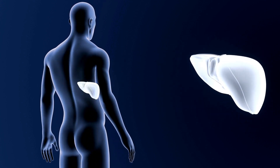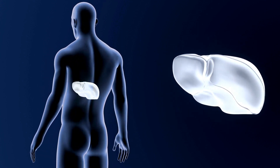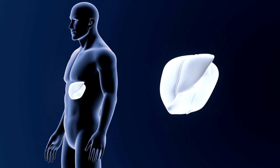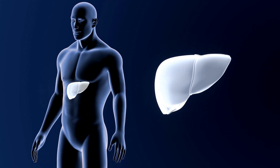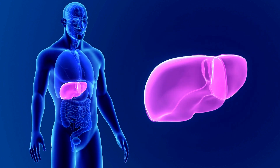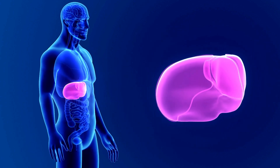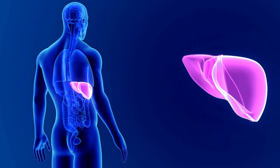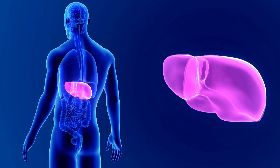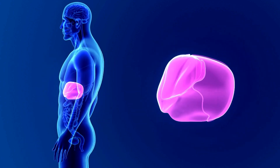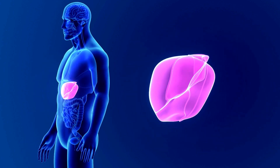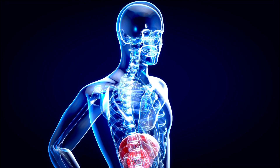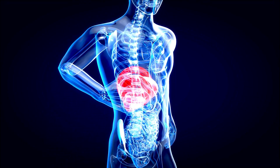Cirrhosis is a condition in which regenerated hepatic cells aggregate and are separated by bands of scar tissue or deposition of collagen tissues, causing damage and death of liver cells. Some causes of cirrhosis include prolonged hepatitis infection, chronic alcoholism, and genetic metabolic disease. Due to cirrhosis, liver function can stop completely.